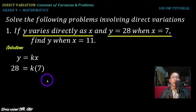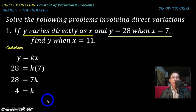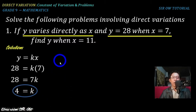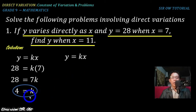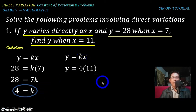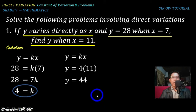Dividing both sides by 7, we get k = 4. So the constant of variation is 4. We are not yet done because we also need to find y when x = 11. Using the equation y = kx with k = 4 and x = 11, we get y = 4 × 11 = 44. Therefore y = 44.